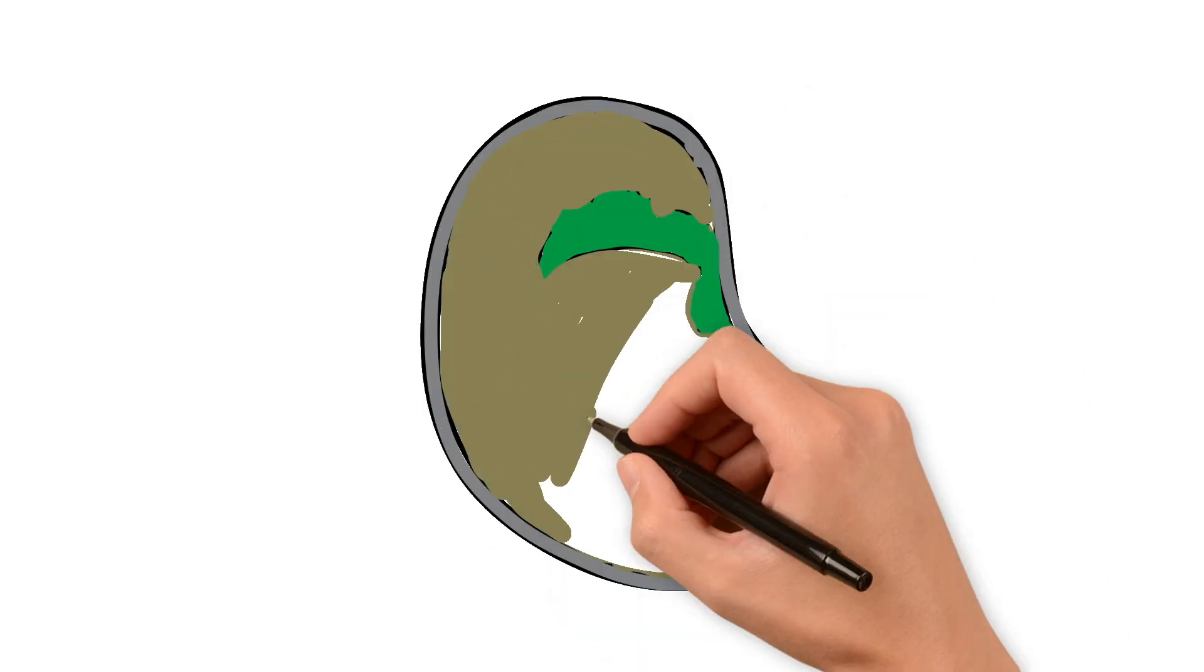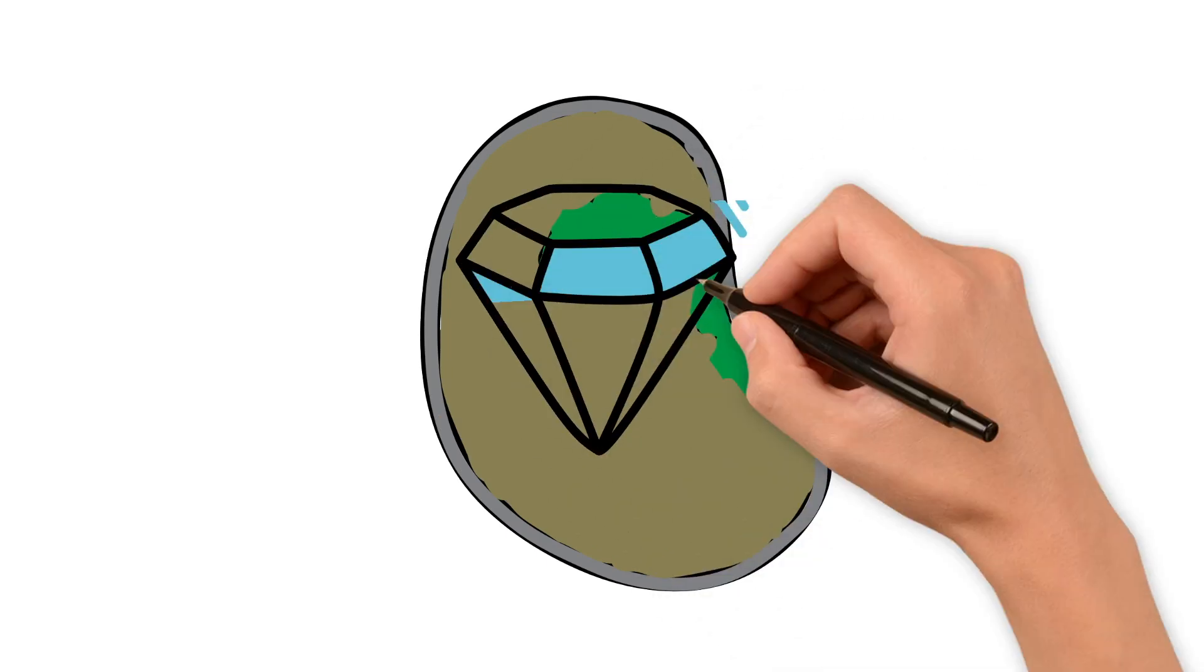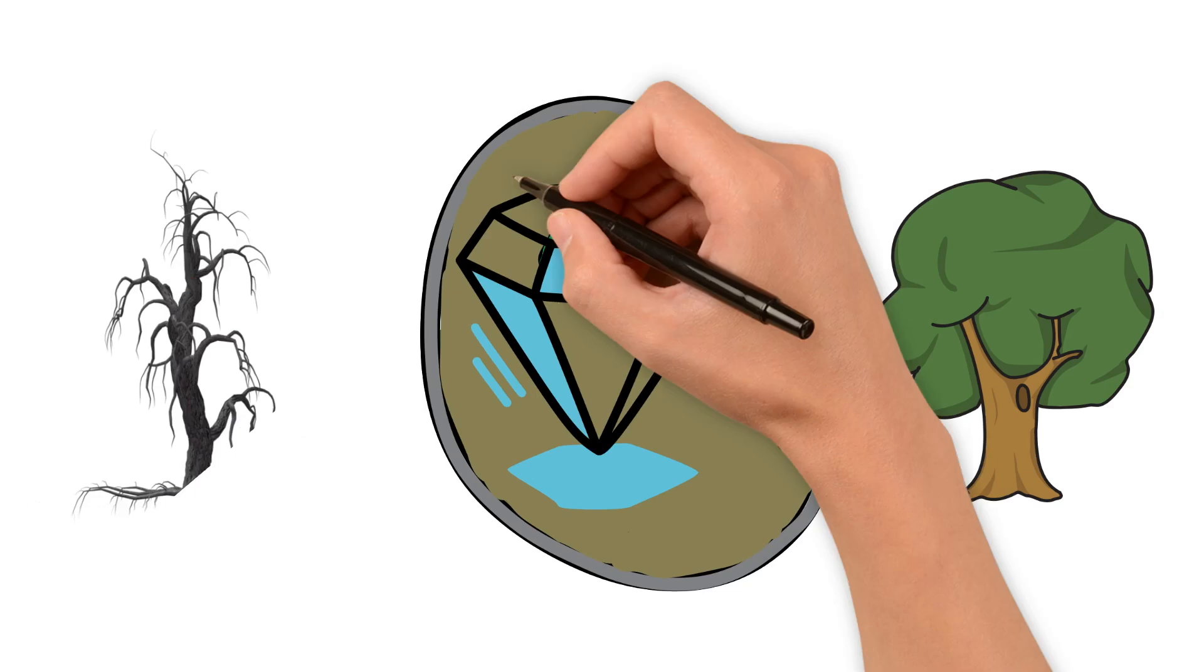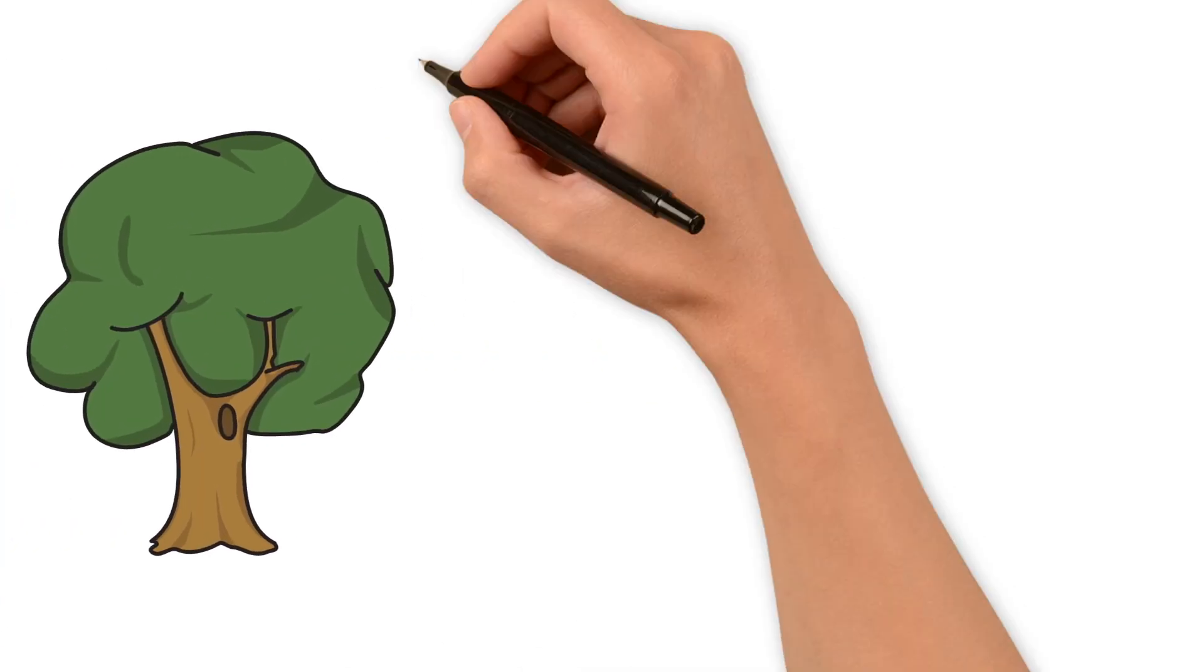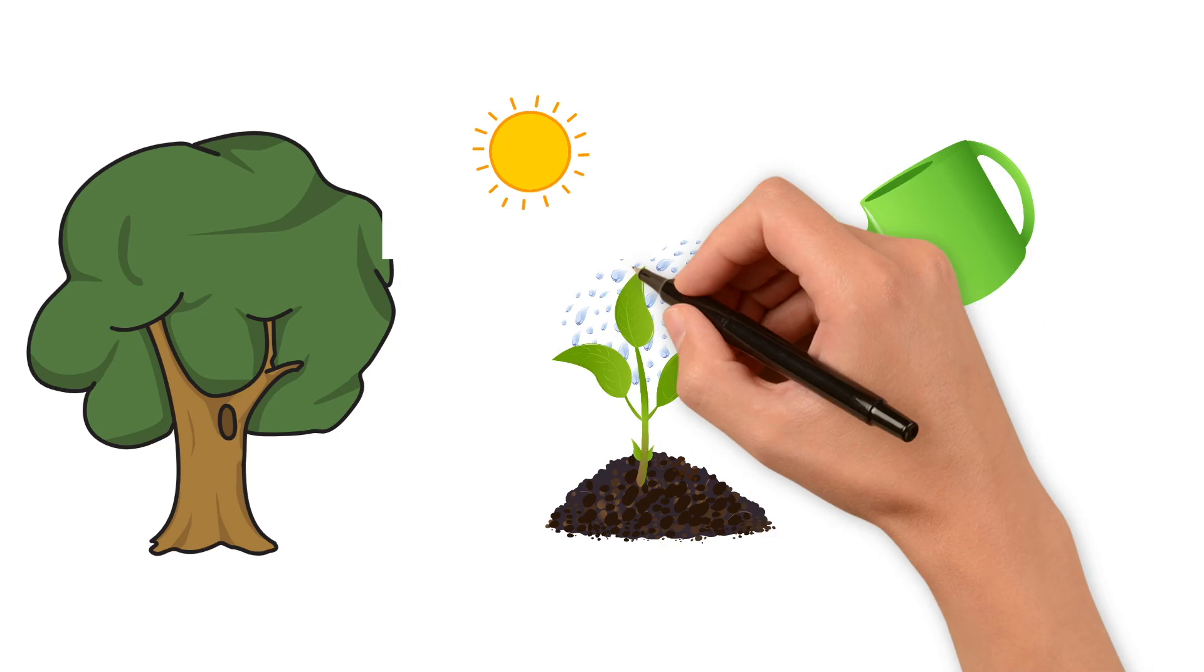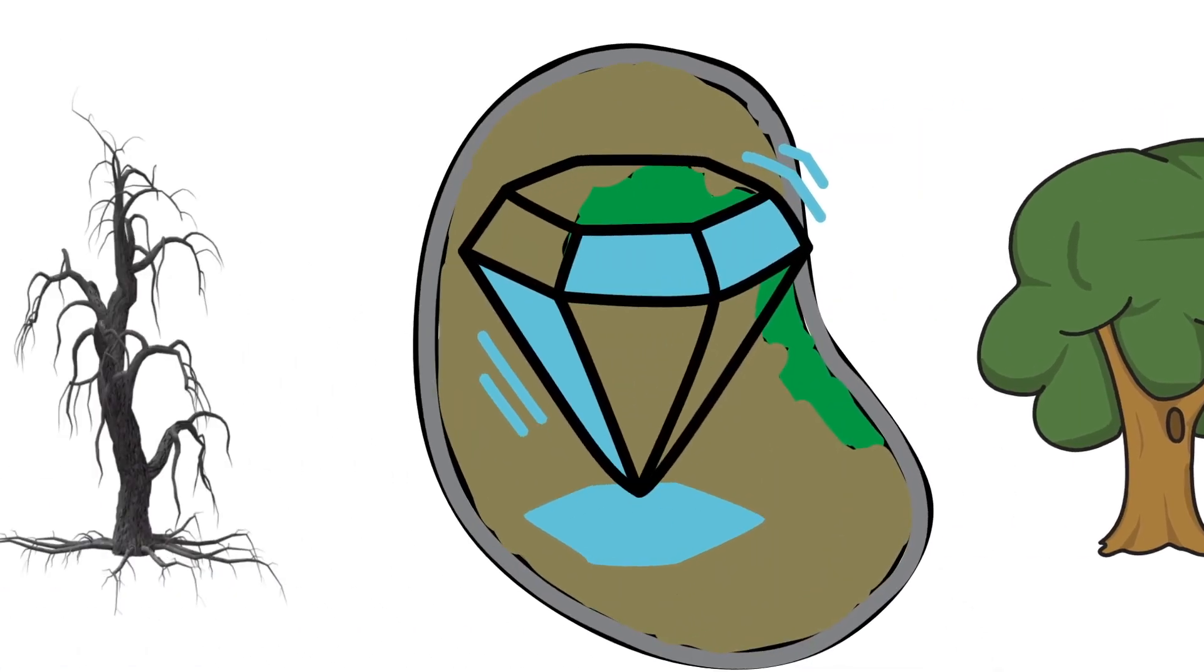Imagine a seed for a moment. Inside it, there's potential. But that potential may or may not develop, depending on where it's planted. If the soil is good, if it has water and sunlight, if it's taken care of, it will grow. If not, it may never bloom.